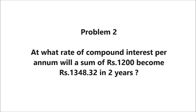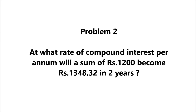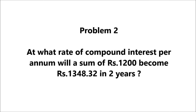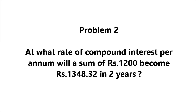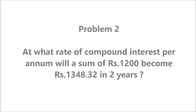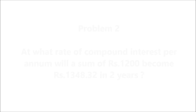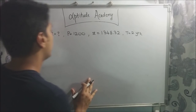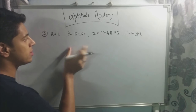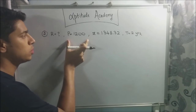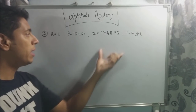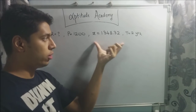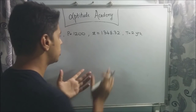Let's move on to Problem 2: At what rate of compound interest per annum will a sum of Rs. 1200 become Rs. 1348.32 in two years? They've asked for the rate at which Rs. 1200 becomes Rs. 1348.32 after two years.